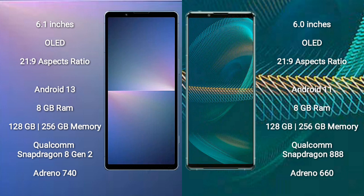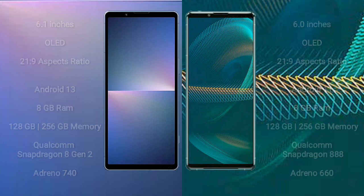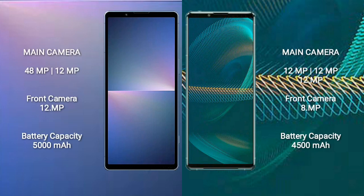The Sony Xperia 5 Mark 5 comes with 8GB RAM and 128GB to 256GB internal storage, a Qualcomm Snapdragon 8 Gen 2 processor, and an Adreno 740 GPU. The Sony Xperia 5 Mark 3 comes with 8GB RAM and 128GB to 256GB internal storage, a Qualcomm Snapdragon 888 processor, and an Adreno 660 GPU.